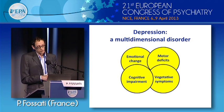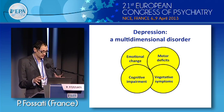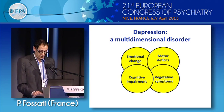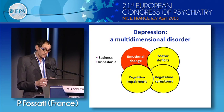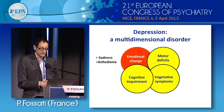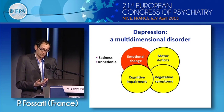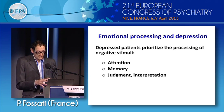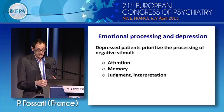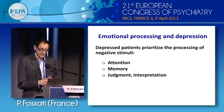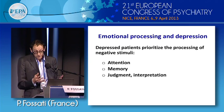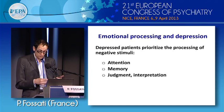Moving to depression, we can say that depression is a multi-dimensional disorder. We know it is associated with motor deficit, vegetative symptoms, cognitive impairment, and emotional changes. There are at least two major emotional changes: persistent sadness and the loss of positive emotions — the loss of positive pleasure, which is called anhedonia. We also know that depressed patients have difficulty processing emotional stimuli. They show what we call emotional bias — they pay more attention to negative stimuli, observable during attentional tasks, memory tasks, judgment, and interpretation.